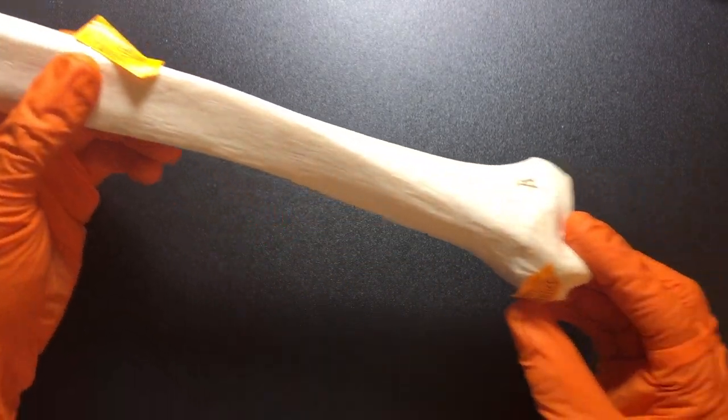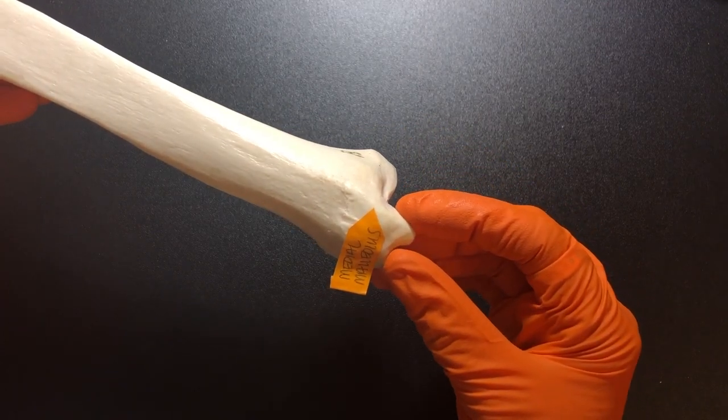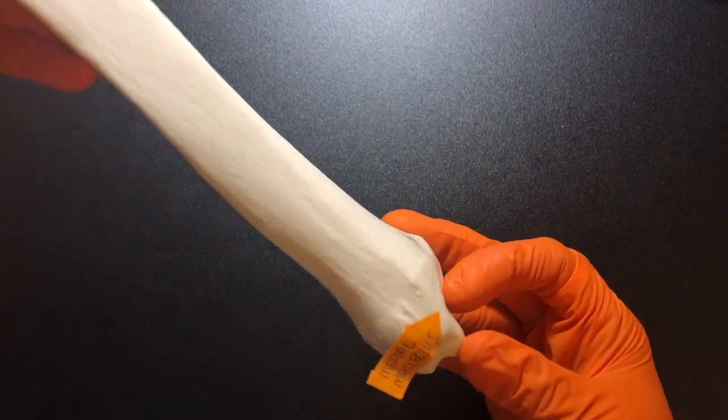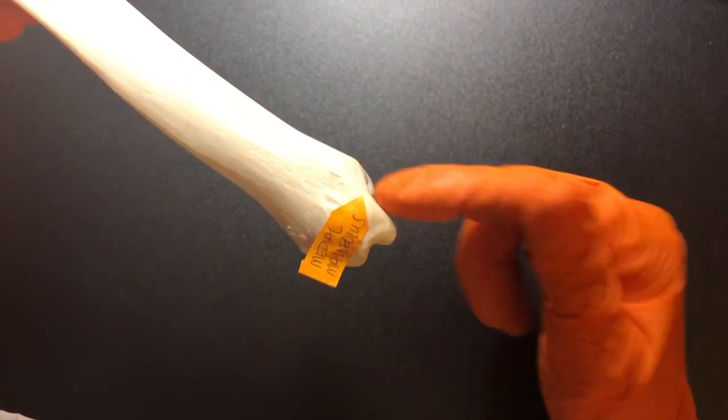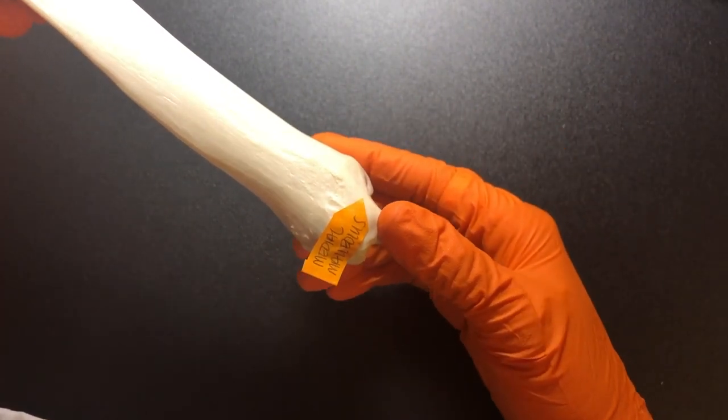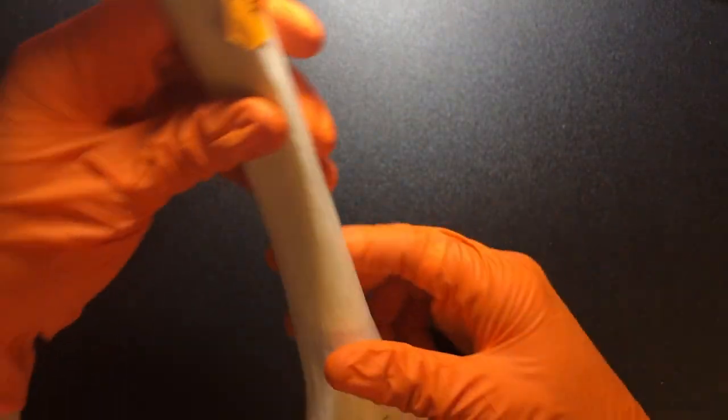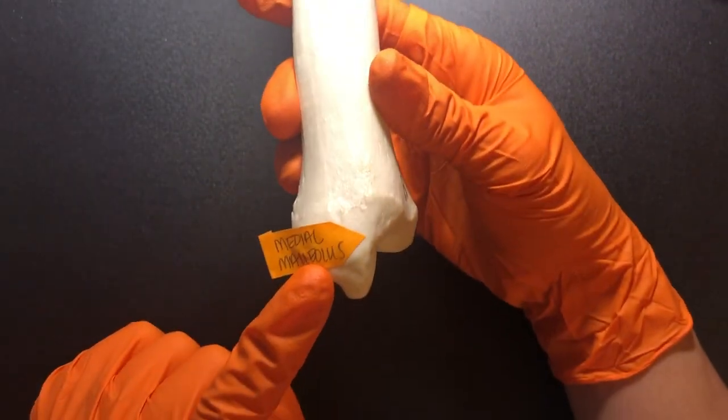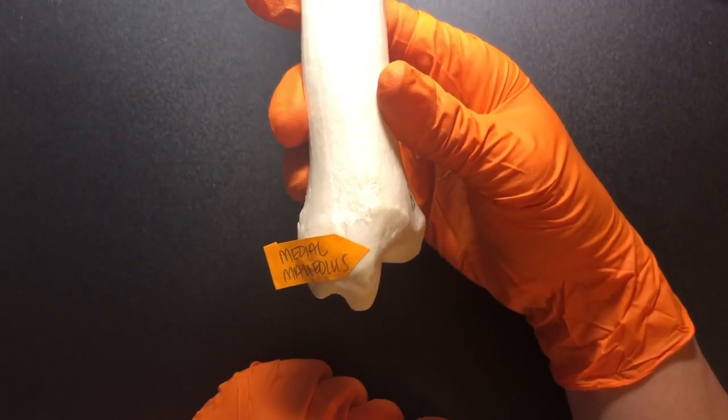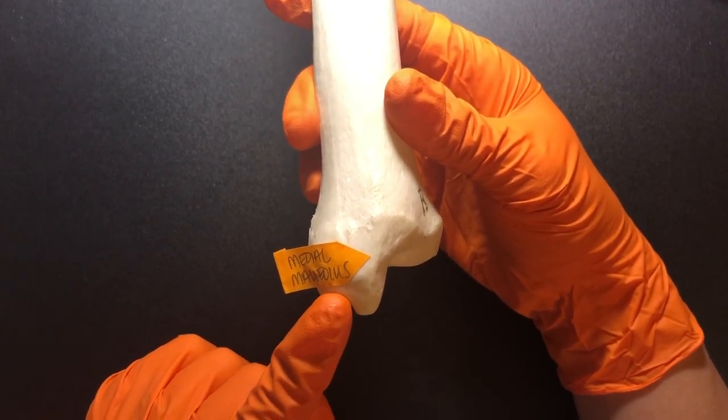So let's go to the distal end of the bone. We have these structures called malleoli. And the tibia will have the medial malleolus. So if you were to palpate those bony-like structures in your ankle, I think people commonly call these the ankle bones, the one on the inside is the medial malleolus. So really what you're palpating is the distal end of your tibia. So again, the tibia creates the medial malleolus.